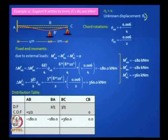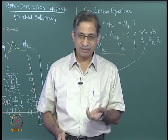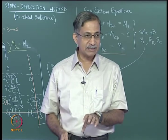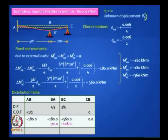The fixed end moments are minus 180, minus 180, plus 360, and 0 at the propped end. You had no business arresting theta B, so you release that moment. The net moment at B is minus 180 plus 360 equals plus 180, which you must balance. You distribute it in proportion to relative stiffnesses — multiply by 2/5 and 3/5. You carry over only to the left end A (not to the right because it is a propped cantilever). The carry-over factor is plus half, so half of minus 72 is minus 36. This is called a one-cycle distribution, giving exact results.